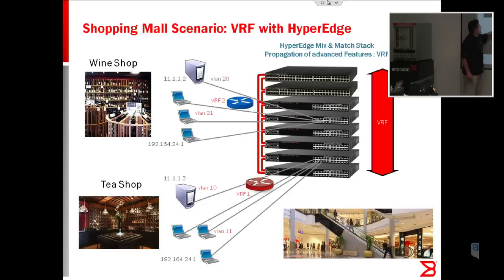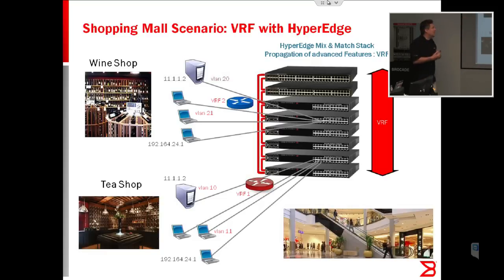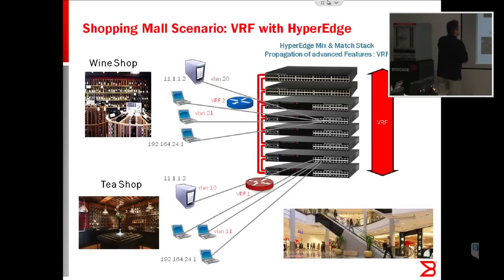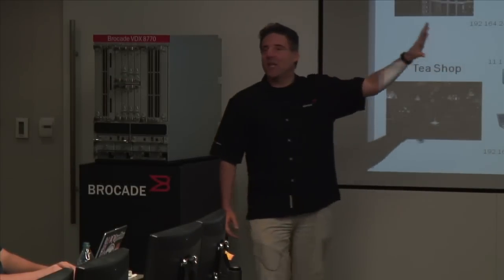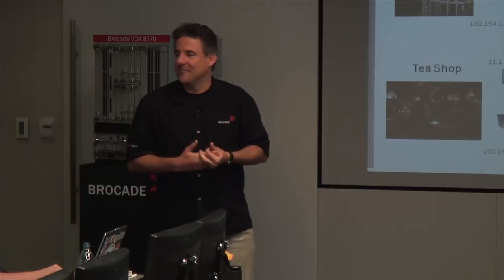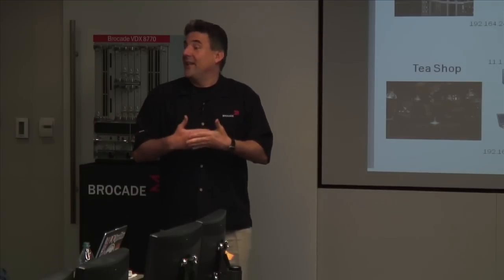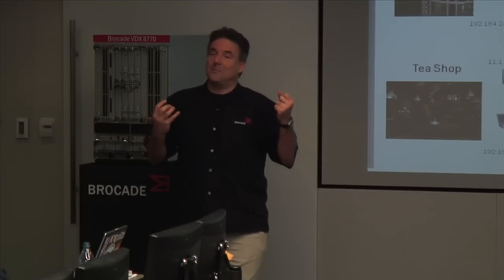The network admin wanted to simplify IT management, so he assigned the same IP range to all the stores — one IP range for the client VLAN with the laptops and another for the servers — but all stores share the same configuration. When each store routes between the client and the server, you need virtual routing instances, because a single routing instance cannot route through overlapping IP address ranges. This is why VRF is needed here.